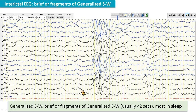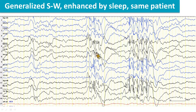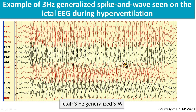Generalized spike and waves are seen in the interictal EEG. These are brief, usually less than 2 seconds, and most commonly seen in sleep. The epileptiform discharge could be provoked by several conditions including sleep or sleep deprivation. This slide and the next show the epileptiform discharge enhanced by sleep. This is an awake EEG which shows normal background and hardly any epileptiform discharge, while during sleep there are bursts of generalized spike waves.